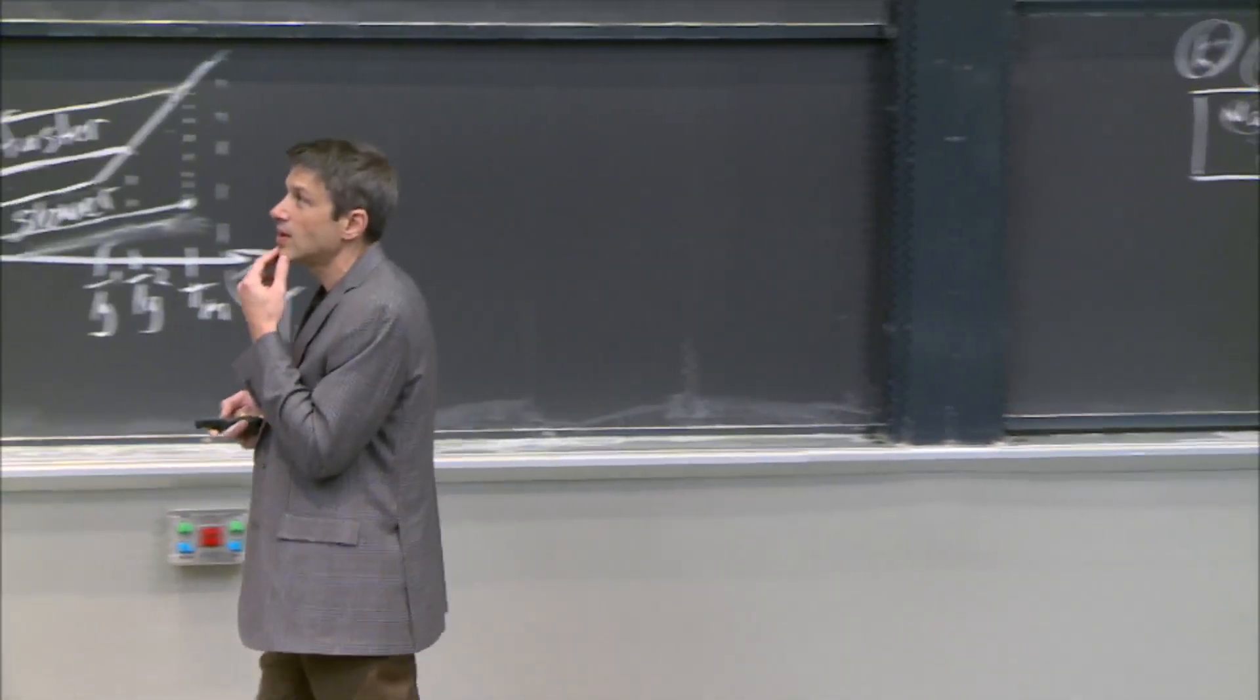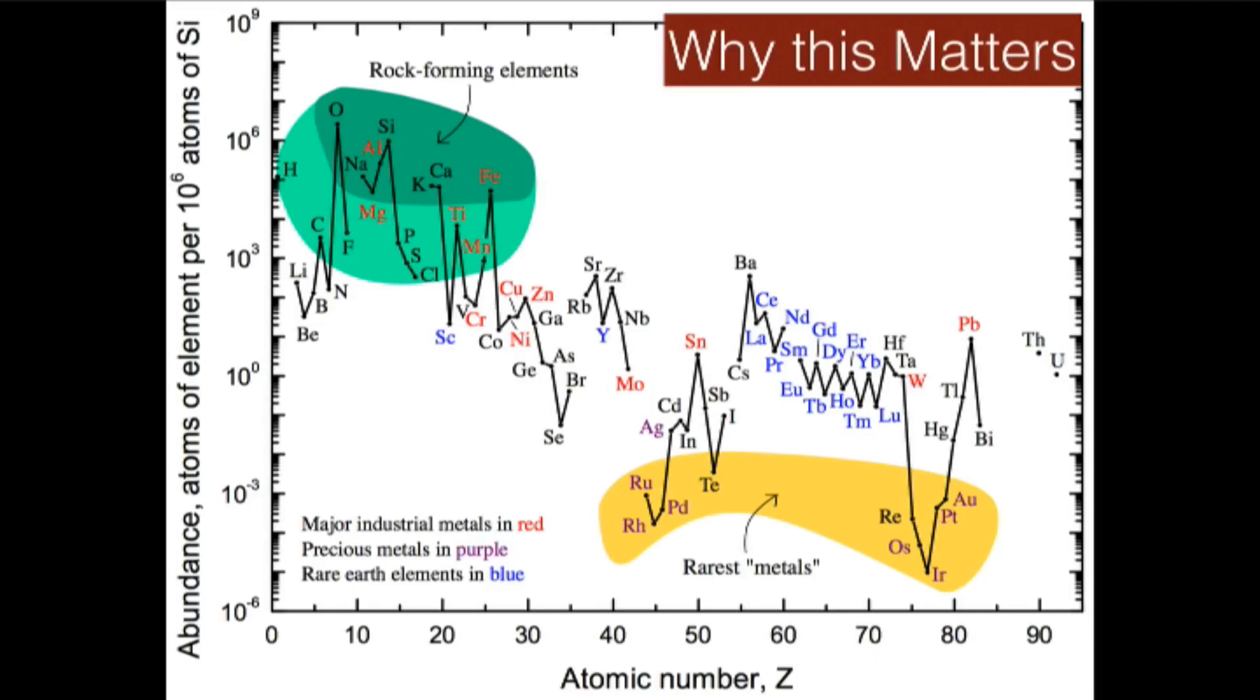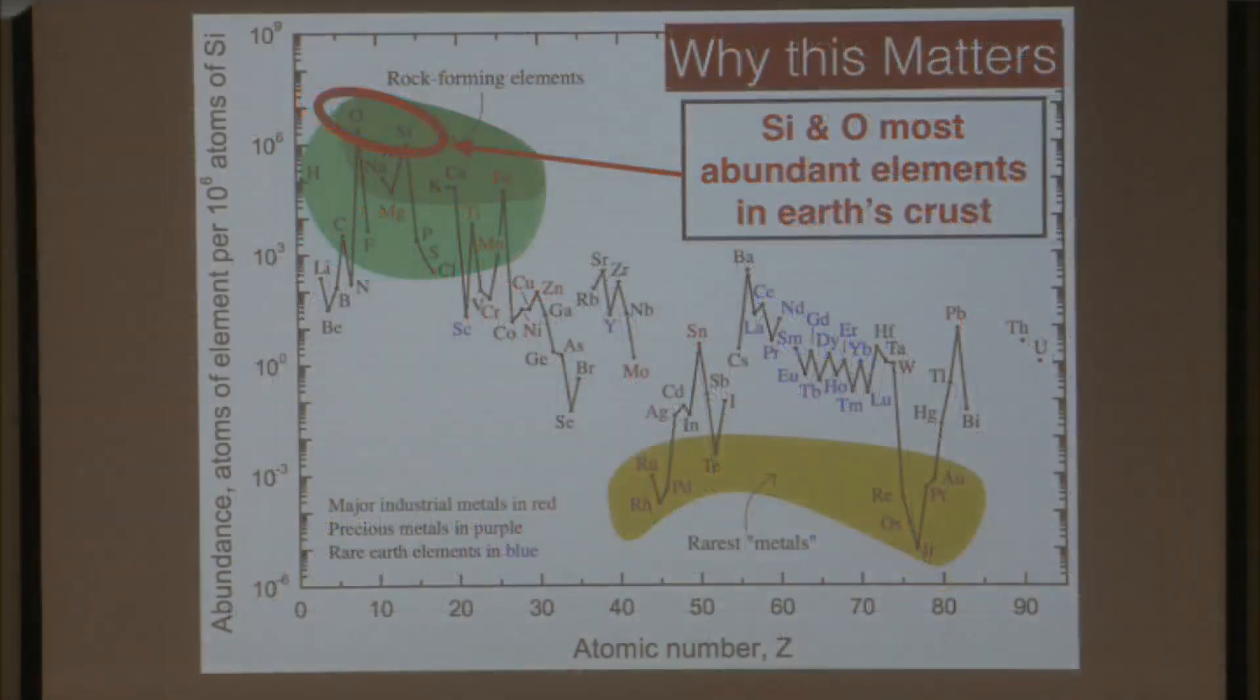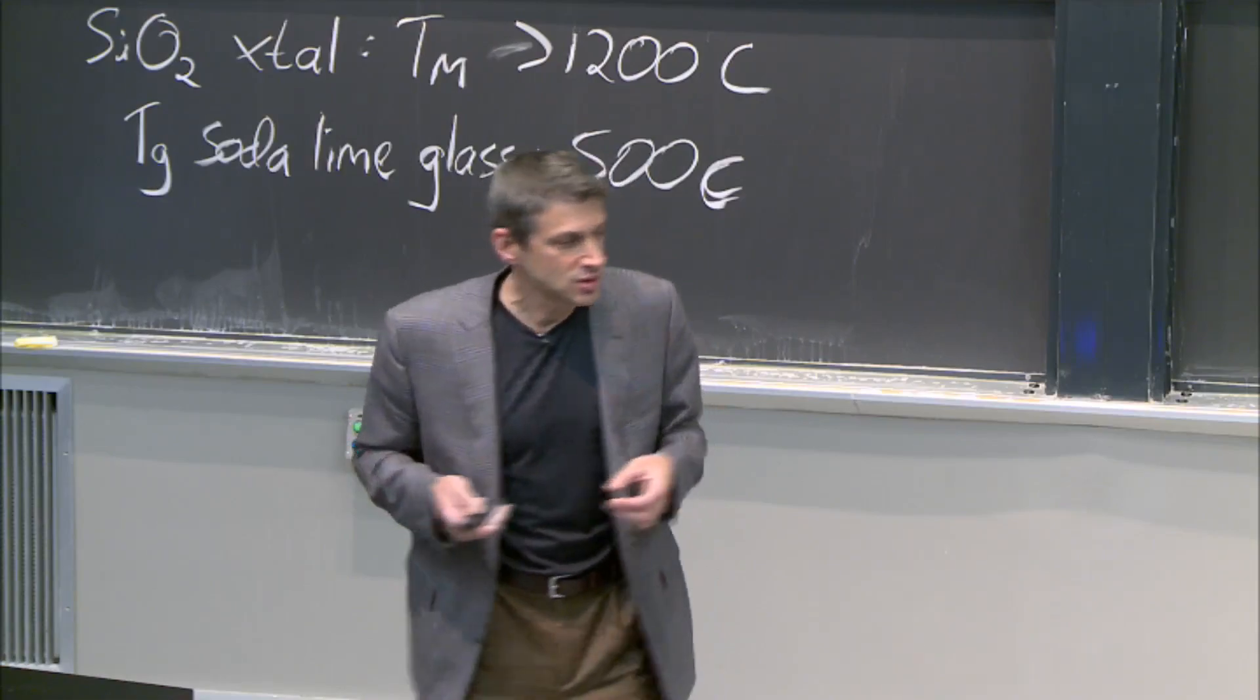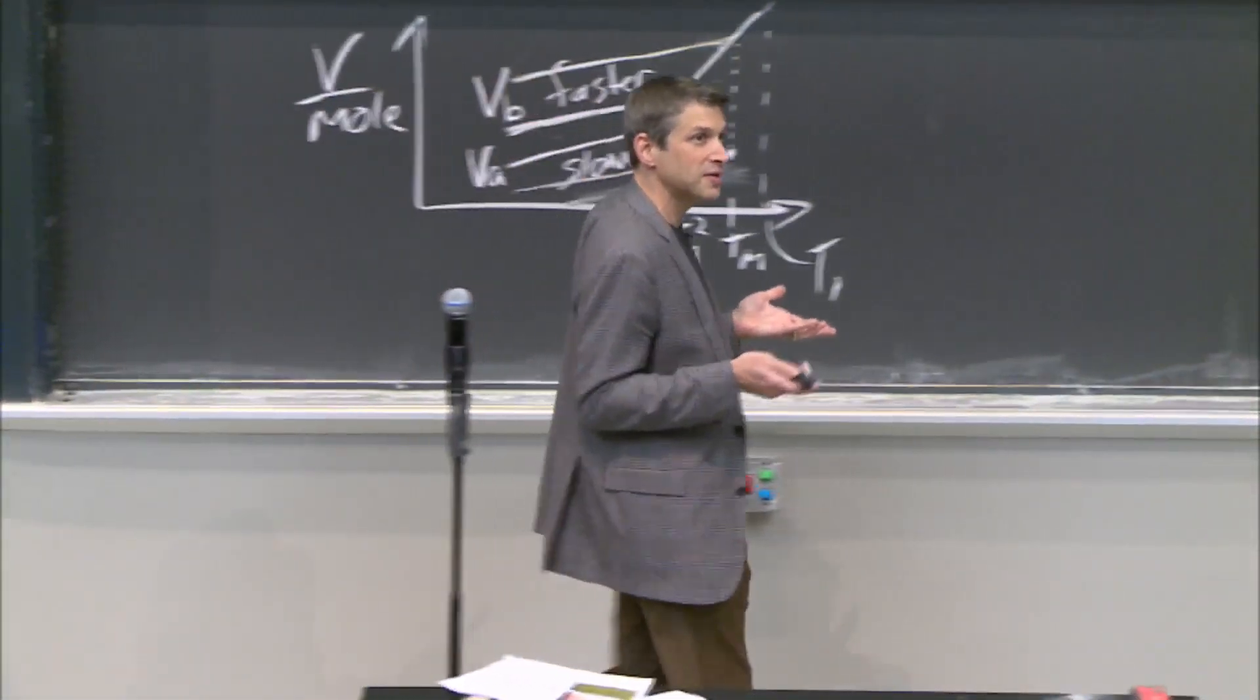And so I'll show you just a couple in my why this matters. Because glass is, after all, made of - there it is up there, in case you can see it. This is the abundance of elements versus atomic number. And you notice the very top two elements are silicon and oxygen. And so it'd be really nice if we could make a lot of stuff out of these really abundant, cheap elements.